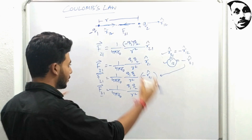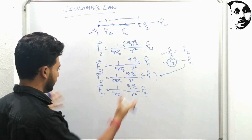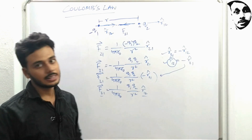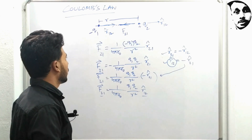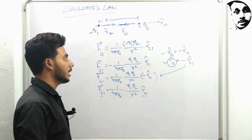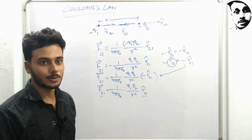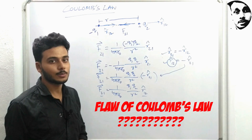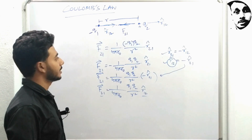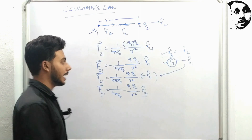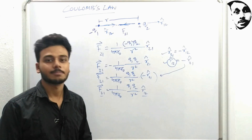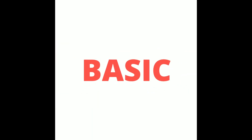This is the main vectorial form of Coulomb's law, and this equation is completely scientifically consistent. In the next lecture, I am going to talk about one of the greatest flaws of Coulomb's law, and we will also correct that. If you liked this video, please subscribe to my channel. Thank you — think basic, think logical.